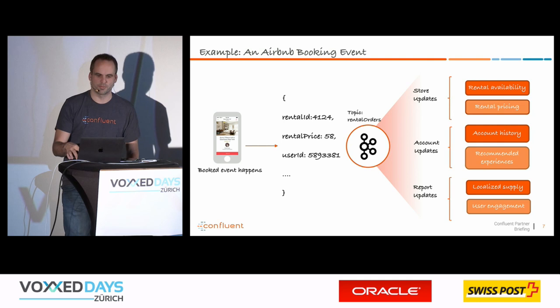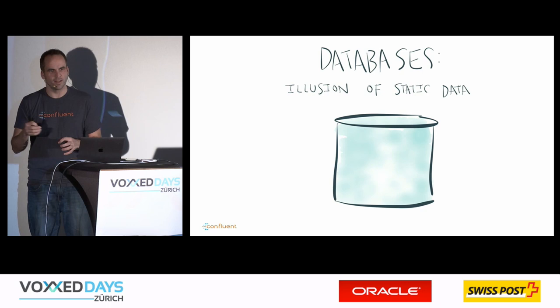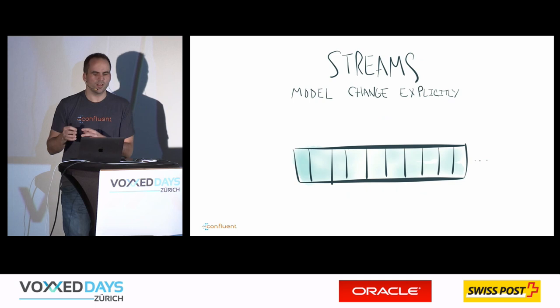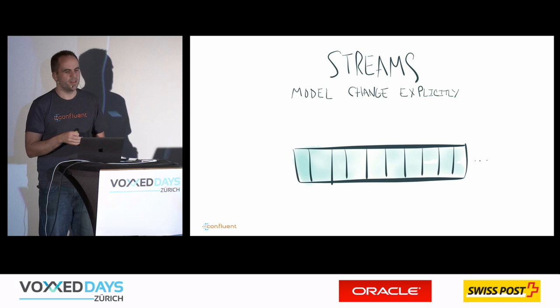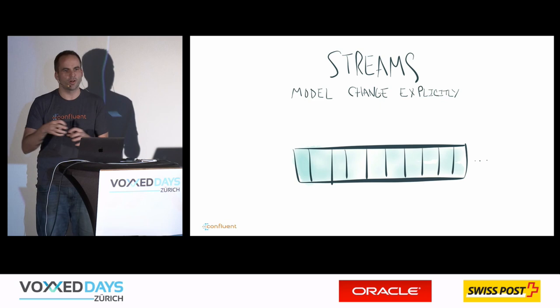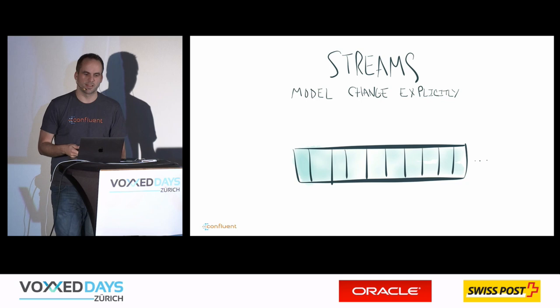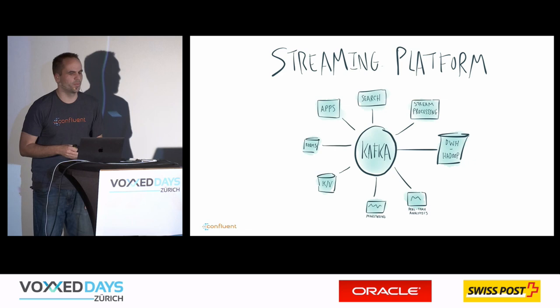We're moving away from storing everything statically in a database where someone polls it again after 10 seconds or an hour. The thinking in Kafka is that you think in streams, and under the hood of streams are events. You store every single event in a log, one after another, and everyone can consume this log from the beginning or from wherever they want. You model change explicitly in new events — it's all event-driven architecture.